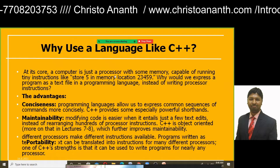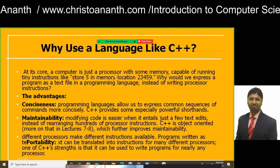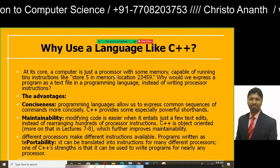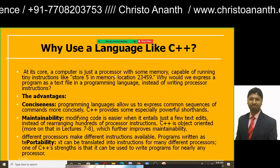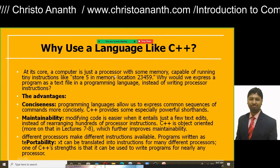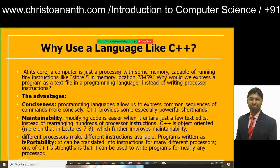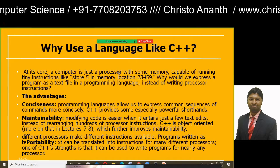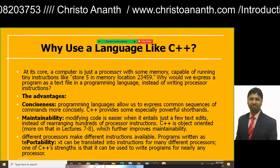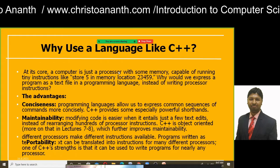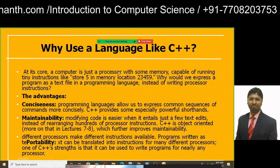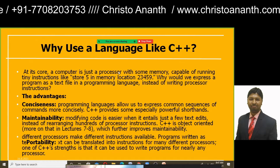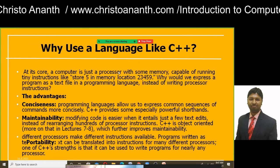C++ also has a key identity feature: it is very easy to modify code with just a few text edits. It is object-oriented, which improves maintainability. Different processors make different instructions available, but C++ is more portable — you can use it across different processors and write programs for nearly any processor. So C++ is more precise, more concise, easy to maintain, and more portable.